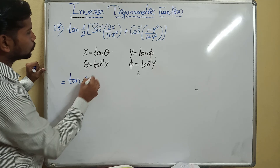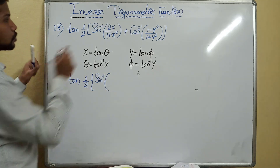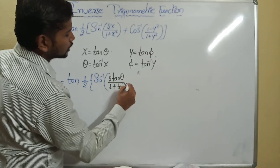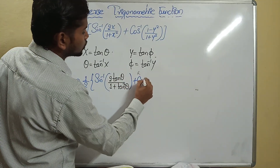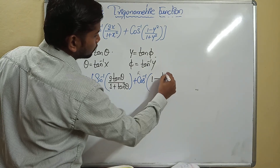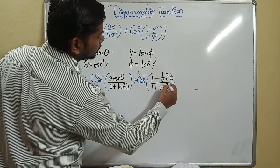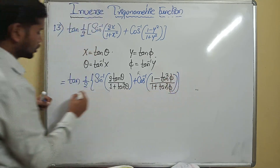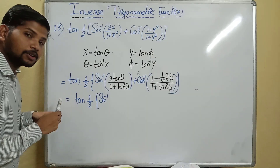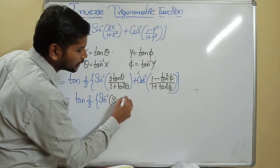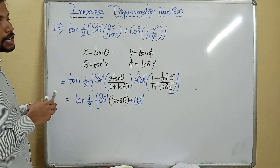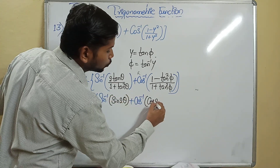Substituting: it is tan of (1/2) × sin inverse of (2 tan θ / (1 + tan²θ)) plus cos inverse of (1 − tan²π / (1 + tan²π)). The sin inverse term gives 2θ and the cos inverse term gives 2π, so we get tan of (1/2 × sin inverse of sin 2θ plus cos inverse of cos 2π).